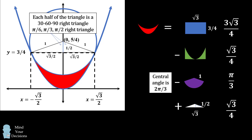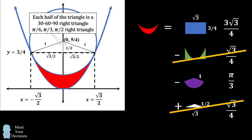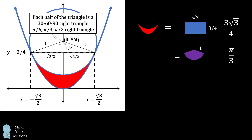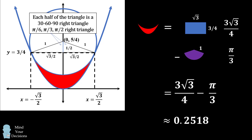Now we calculate the area of the red segment using what we just found. We can cancel out the area under the parabola with the area of the triangle — it turns out those are both equal to the same value, √3/4, which is an interesting piece of trivia. So the area of the red segment equals (3/4)√3 minus pi/3, which is approximately equal to 0.2518. And that's our answer.